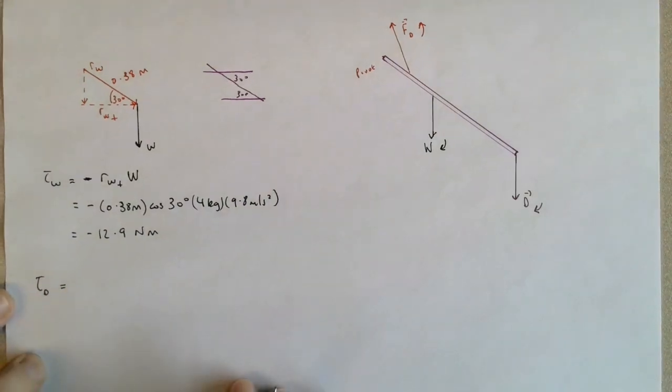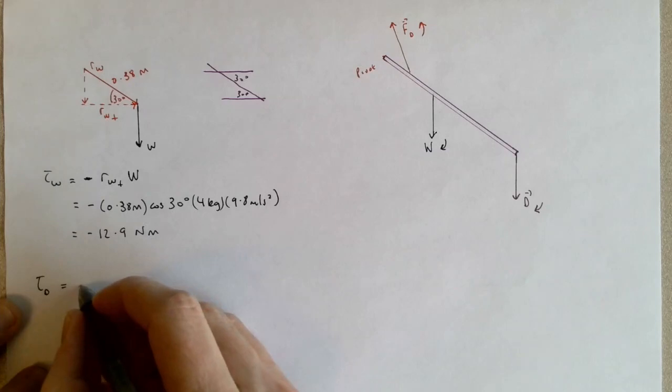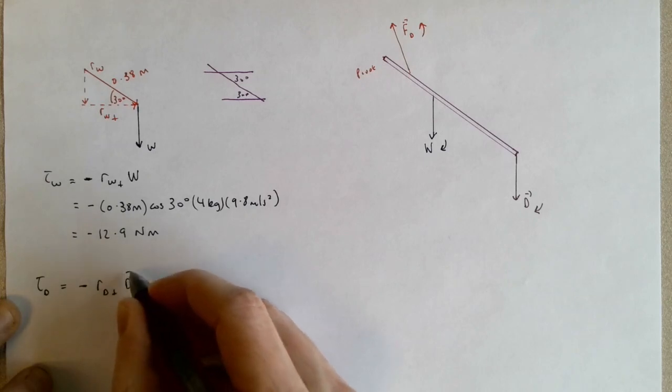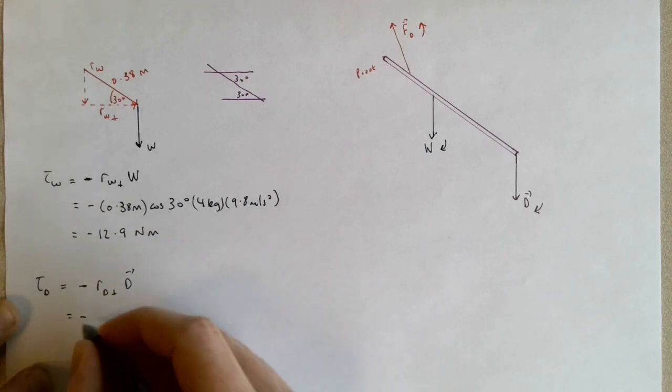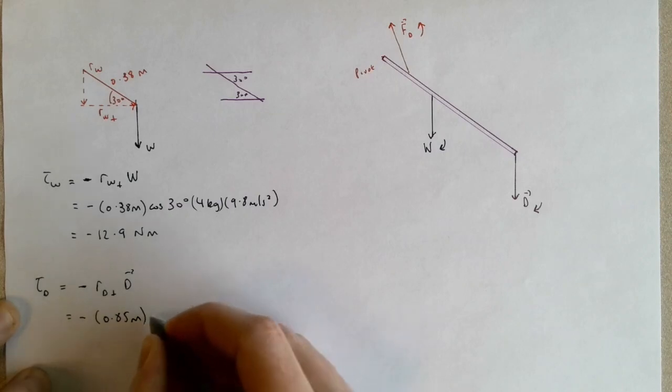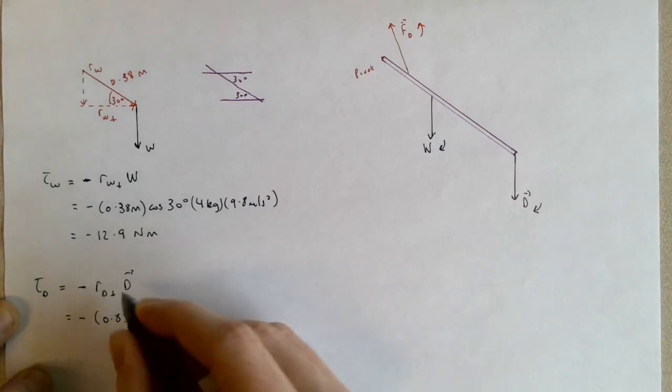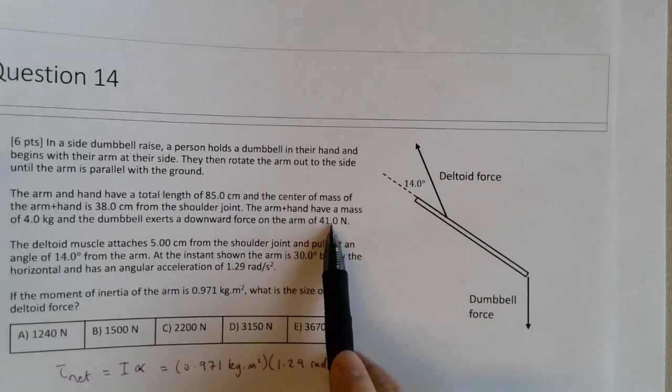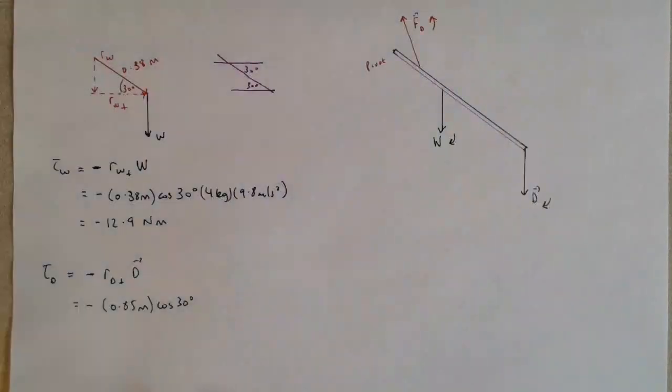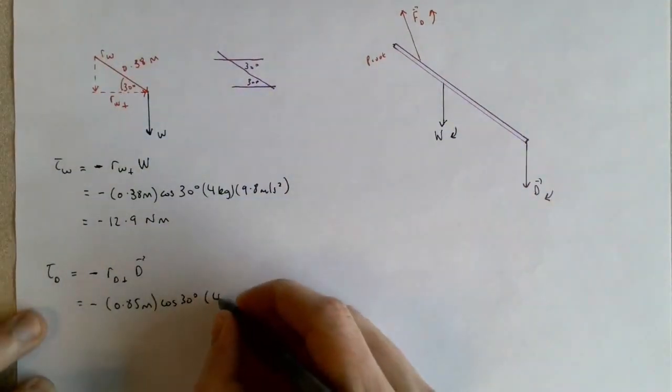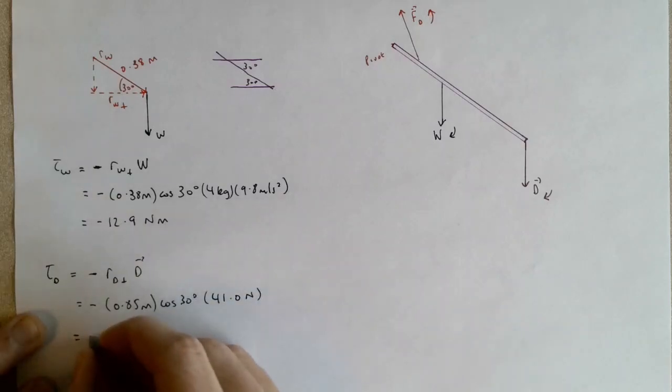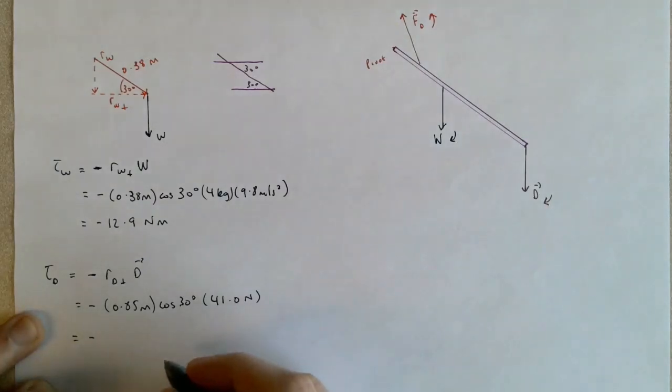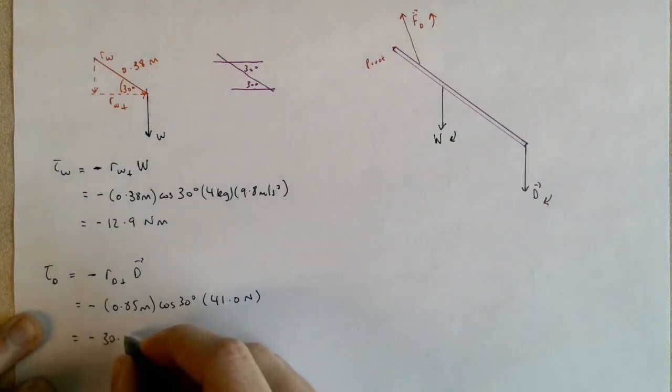Not to confuse the deltoid and the dumbbell. Again, it is also a negative torque. And this again, I would do R dumbbell force perpendicular times the size of the dumbbell force. This is negative 0.85 meters times the cosine of 30 times the size of the dumbbell force. And that one is given in the problem as 41 Newtons. The dumbbell is exerting a downward force of 41 Newtons. So this gives me a torque of negative 30.2 Newton meters.